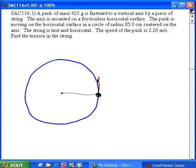I'll name it V, given as 2.20 meters per second. The puck's mass is given as 0.425 kilograms, and the radius of the circle on which the puck moves is given as 0.850 meters.